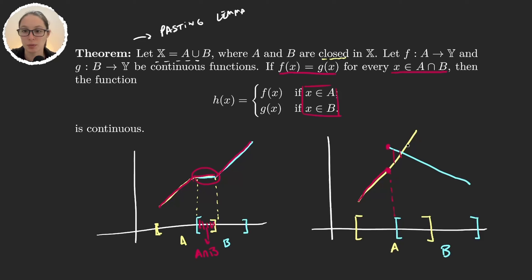Here we would already have problems, and then my function would know how to continue. But in the intersection, if f is different than g, then we are in trouble.